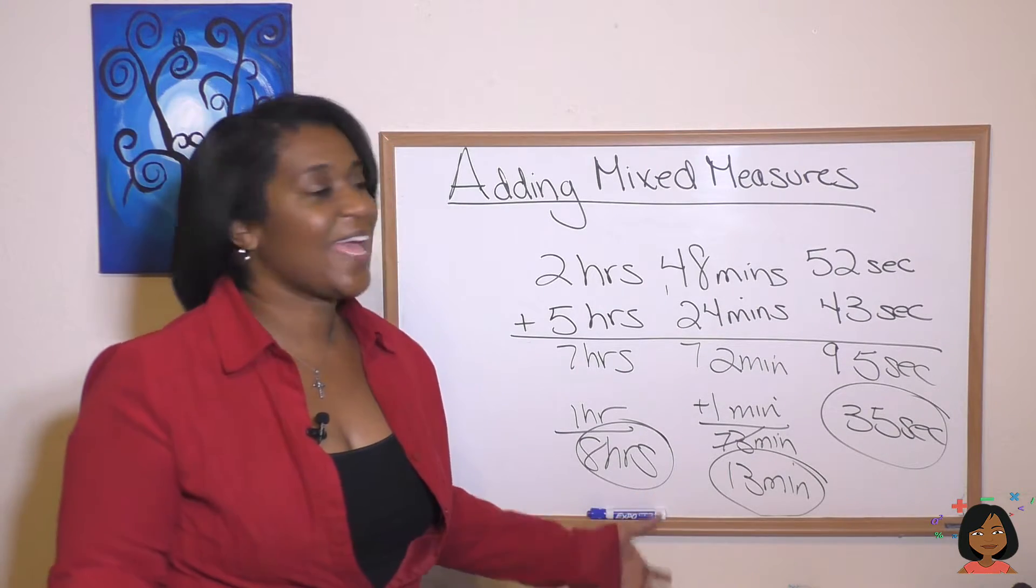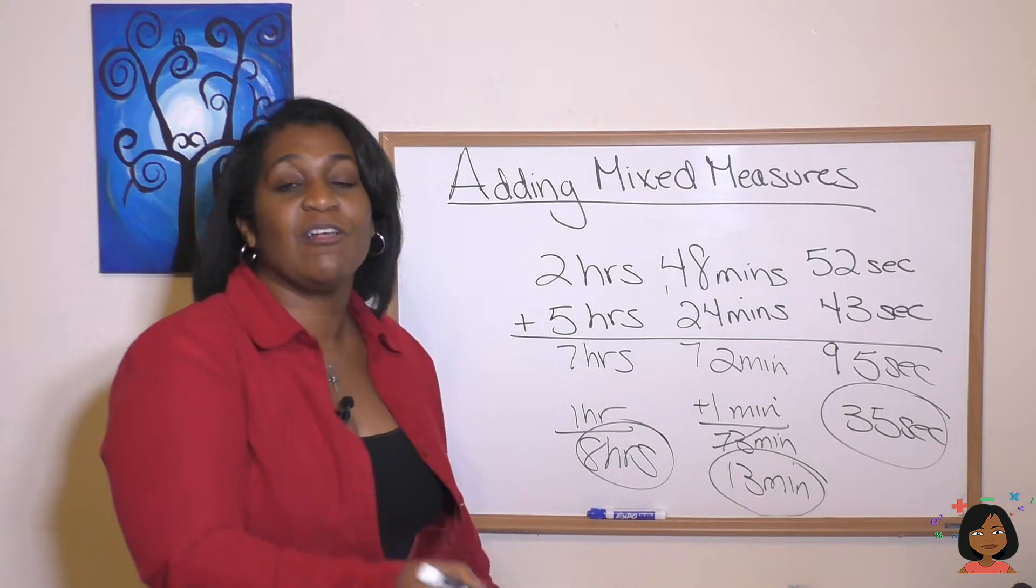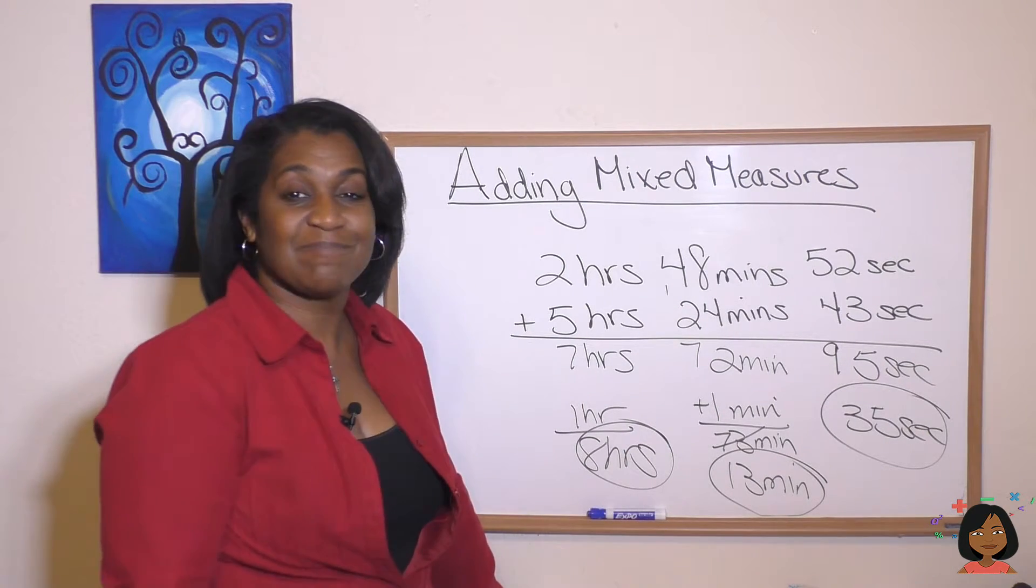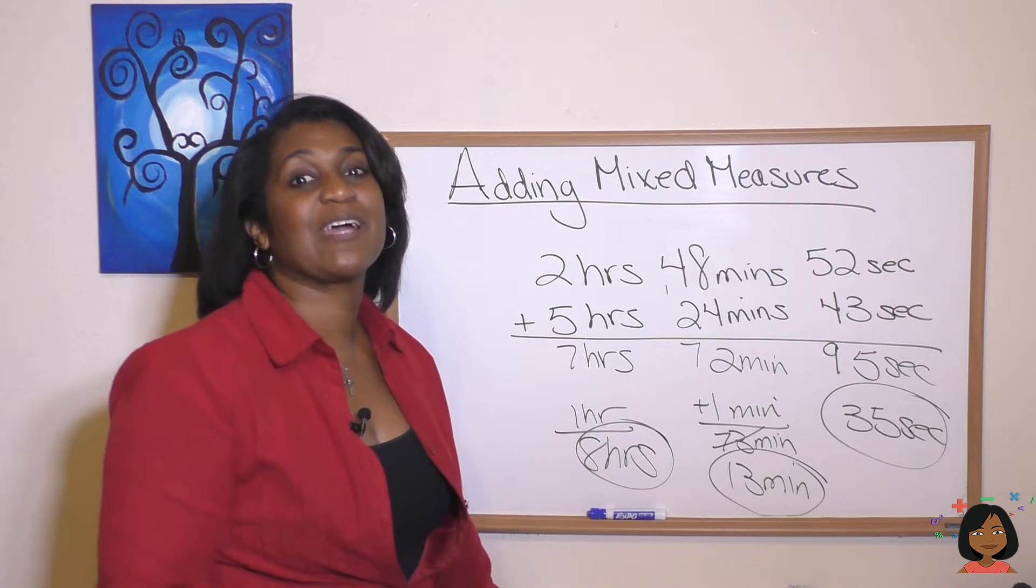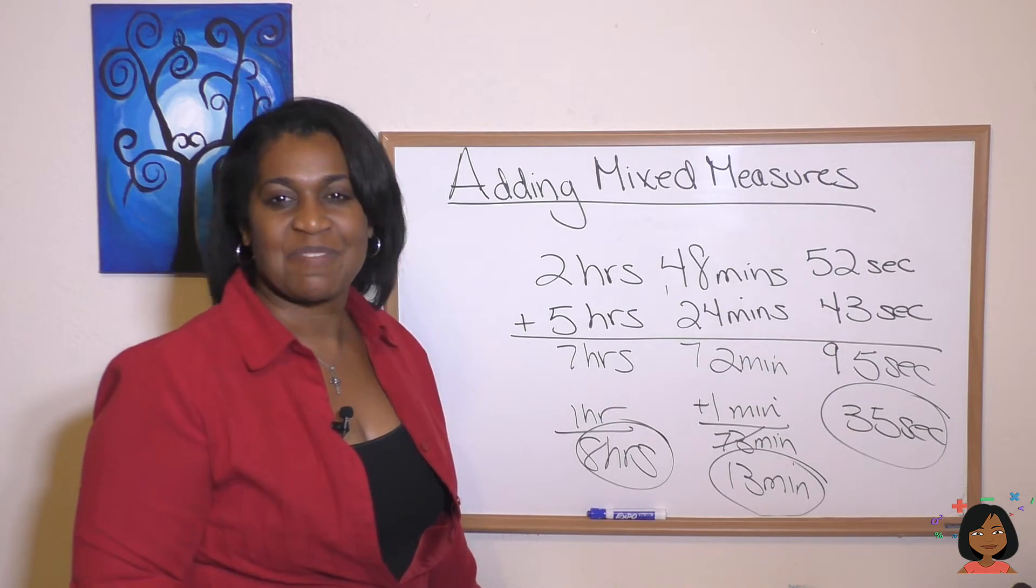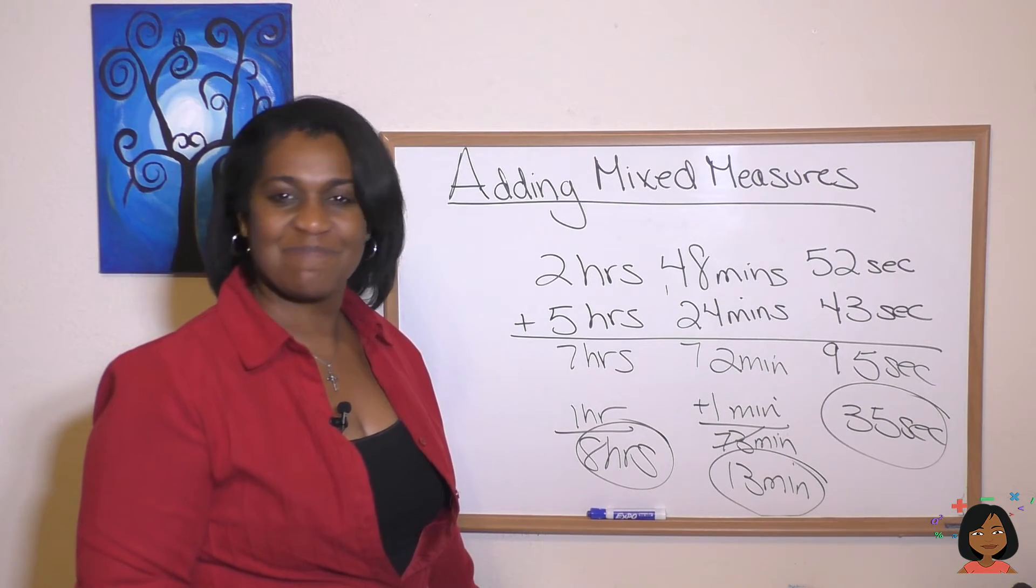And that's really it. Adding mixed measures is not bad at all. Just start with the smallest increment and do conversions as needed. Okay, it's Nicole the Math Lady. Make sure you try the practice problems. We have all different types of measurements to make sure you really get this. I will see you next time. Have a good one. Bye-bye.